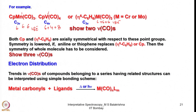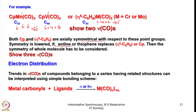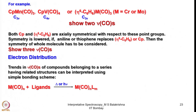Whether using the ionic or covalent counting method, all these compounds show two CO stretching frequencies in their IR spectra. The first has C₃ᵥ symmetry, the second C₄ᵥ, and the third C₃ᵥ again. Both the cyclopentadienyl group and η⁶-arene are axially symmetrical with respect to these point groups. However, symmetry is lowered if aniline or thiophene replaces benzene or cyclopentadienyl, and then the symmetry of the whole molecule must be considered.